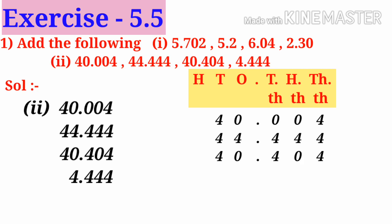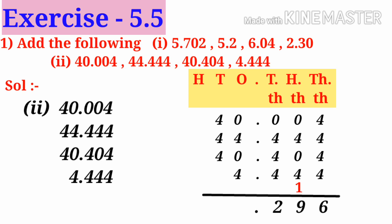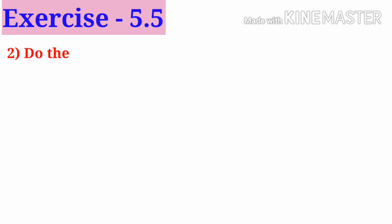Now add in the thousandths place: 4 plus 4 plus 4 plus 4 is 16, write 6 carry 1. In the hundredths place: 4 plus 4 plus 1 is 9. In the tenths place: 4 plus 4 plus 4 is 12, write 2 carry 1. Then in the ones: 4 plus 4 plus 1 is 9. The answer is 129.296.